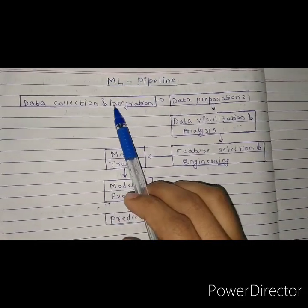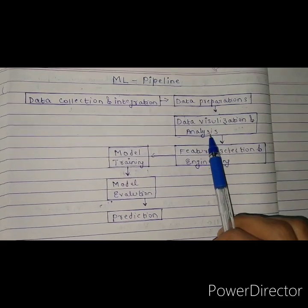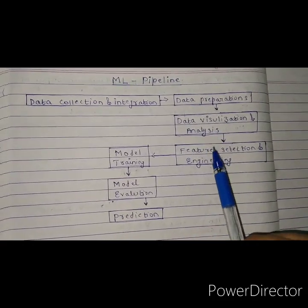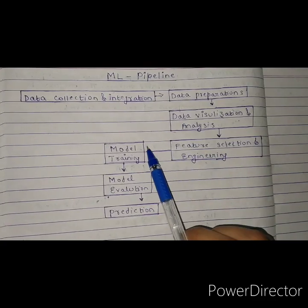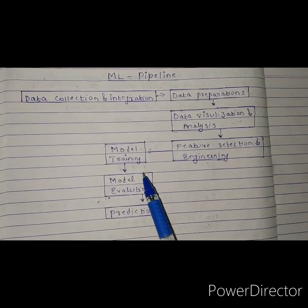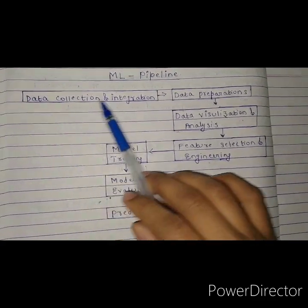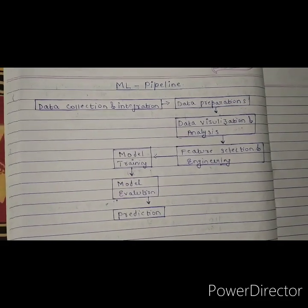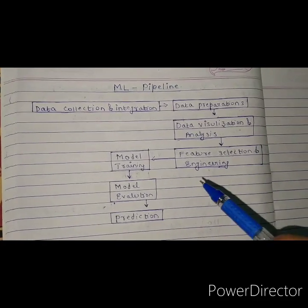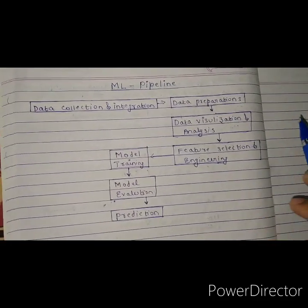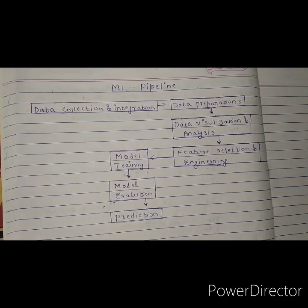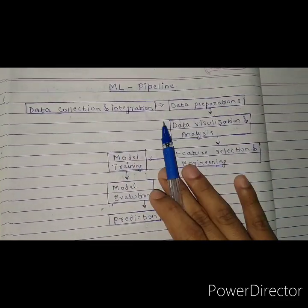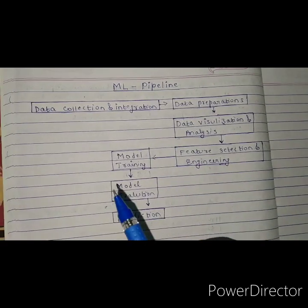So to summarize: the seven steps are — data collection and integration, data preparation, data visualization and analysis, feature selection and engineering, model training and evaluation, and finally prediction. These seven steps form the complete machine learning pipeline for solving any ML problem.